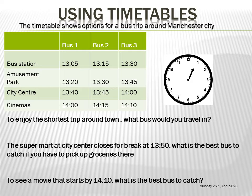This timetable shows the bus trip options available around Manchester city. We have Bus 1, Bus 2, and Bus 3. The buses move from the bus station — the start point — down to the cinemas, which is the end point. You look at the timetable to see which bus fits your timing.